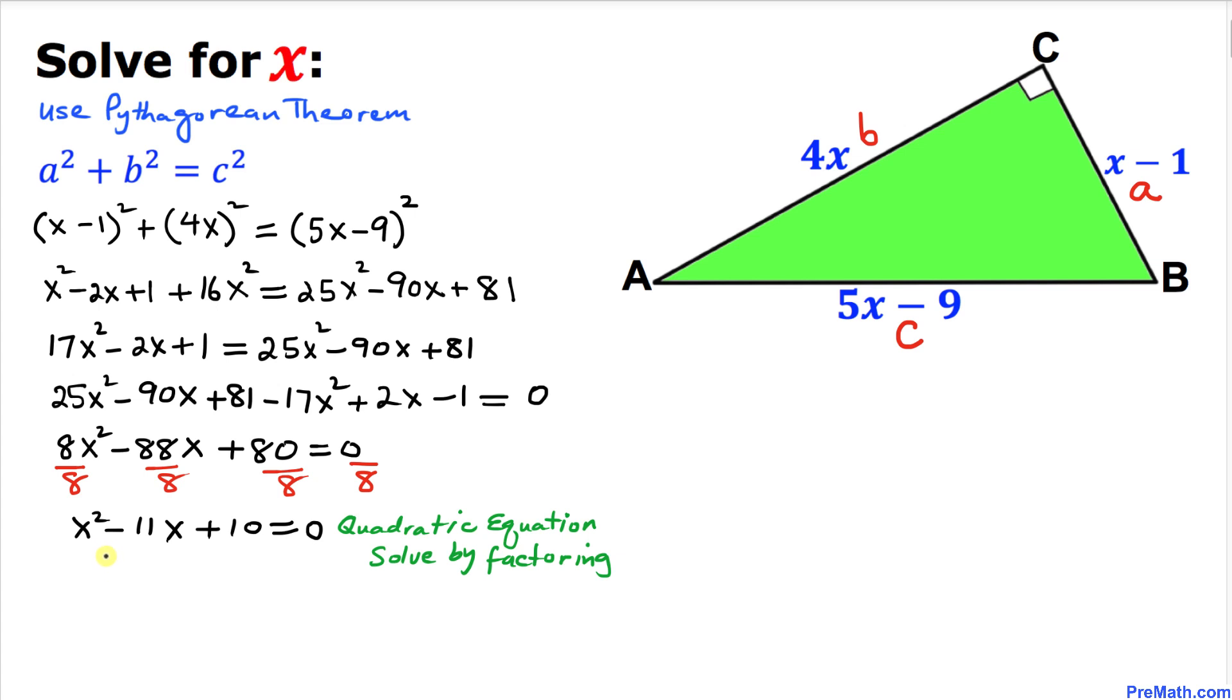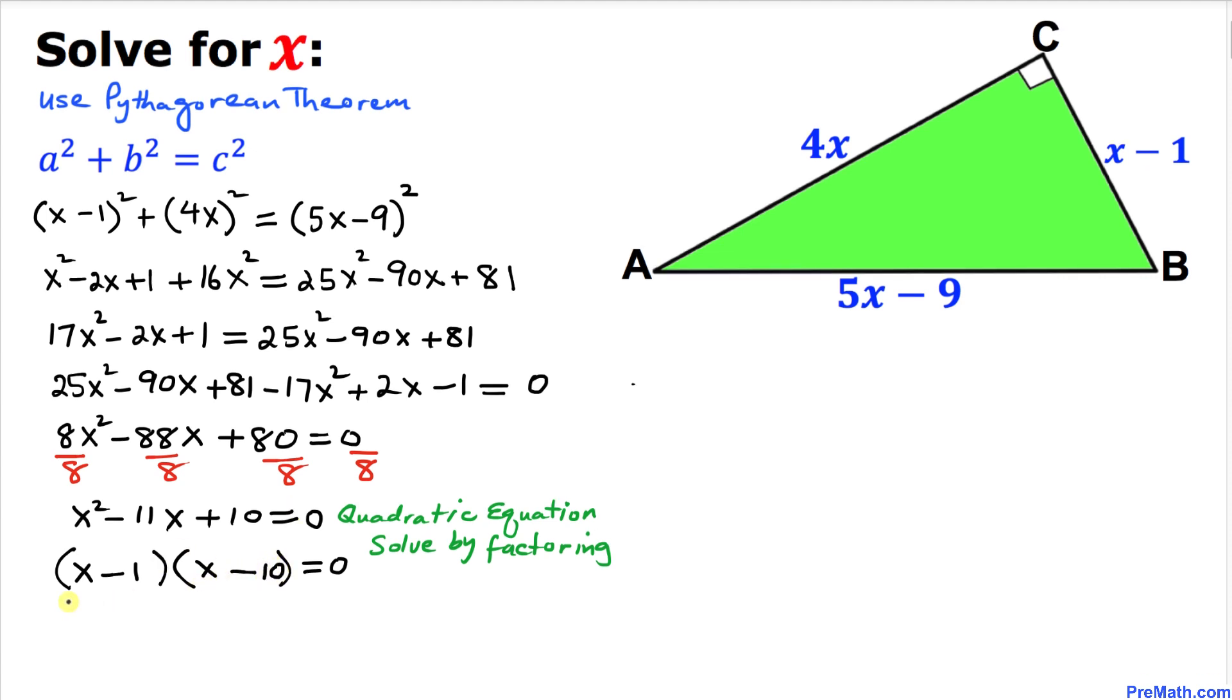We can see that this is a quadratic equation and we can easily solve this one by factoring. Let's find the possible factors. This is going to be x minus 1 times x minus 10.